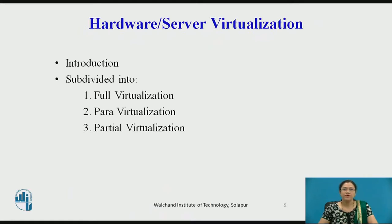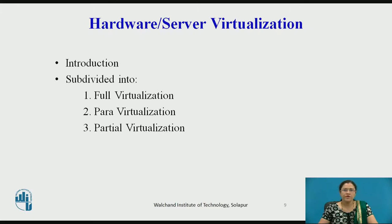Now we will see the details of the different types of virtualization. First, hardware or server virtualization — it is the most common type of virtualization as it provides advantages of hardware utilization and application uptime. It is subdivided into full, para, and partial virtualization. In full virtualization, a complete simulation of the actual hardware takes place to allow software to run on an unmodified guest operating system. In para virtualization, software runs in a modified operating system as a separate system. In partial virtualization, the software may need modification to run.